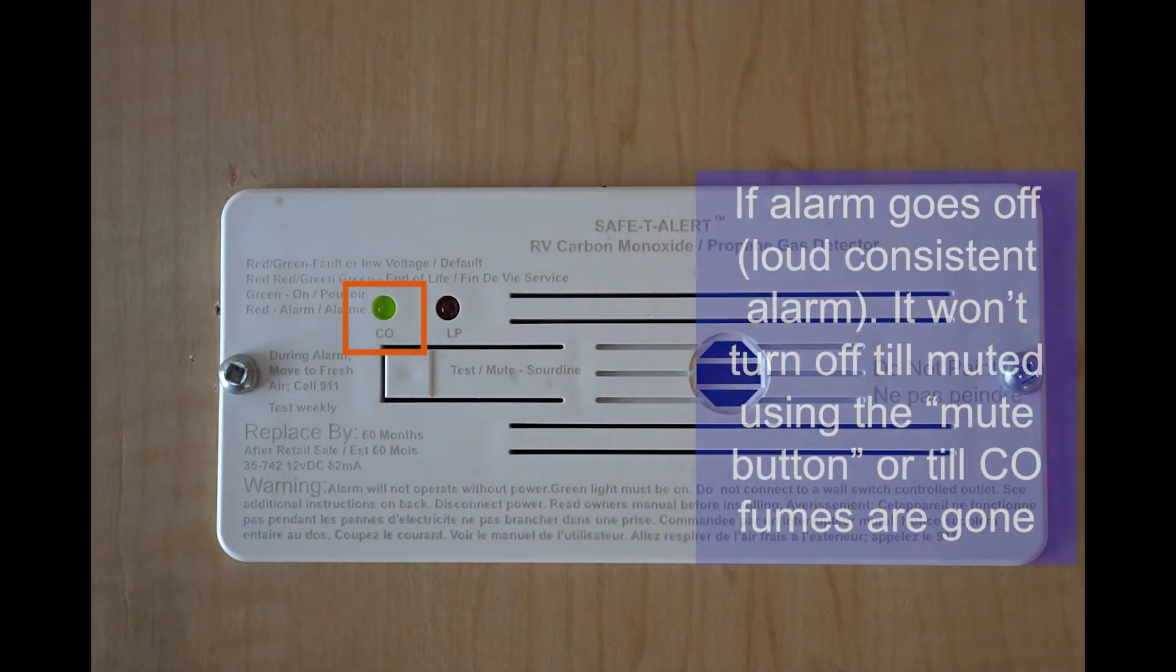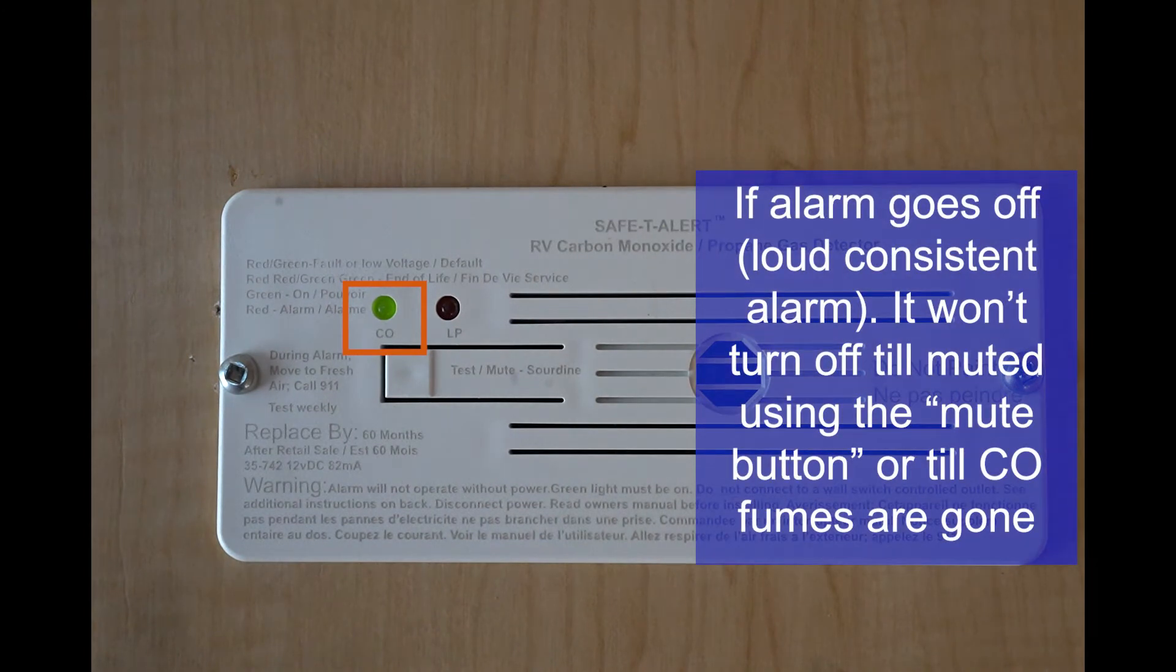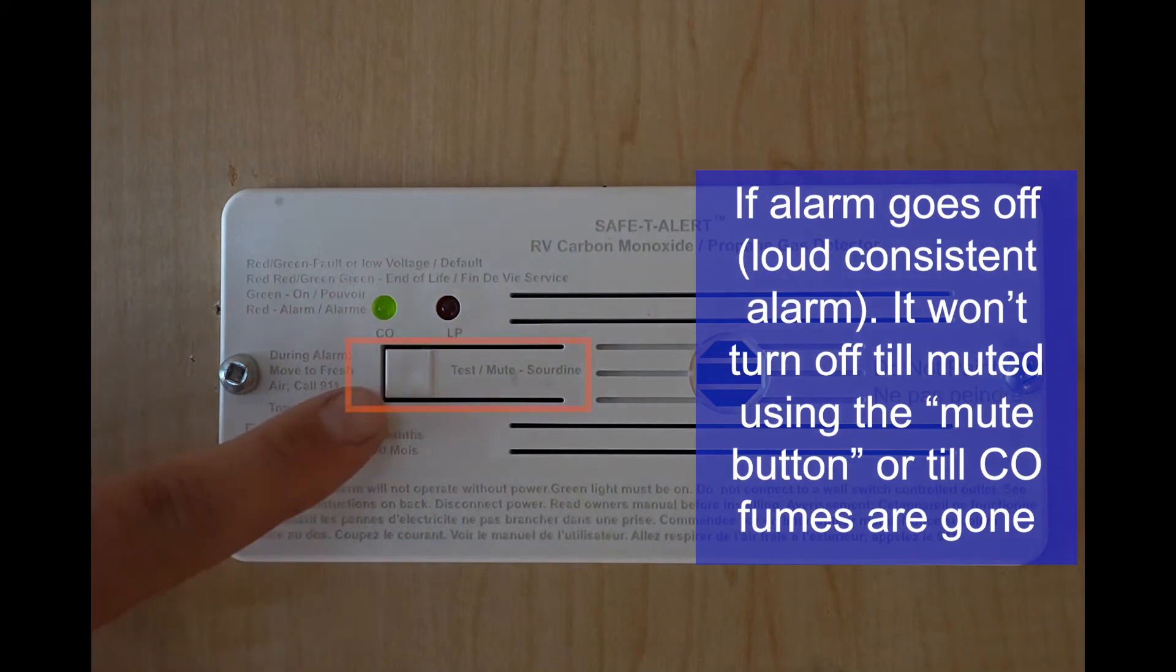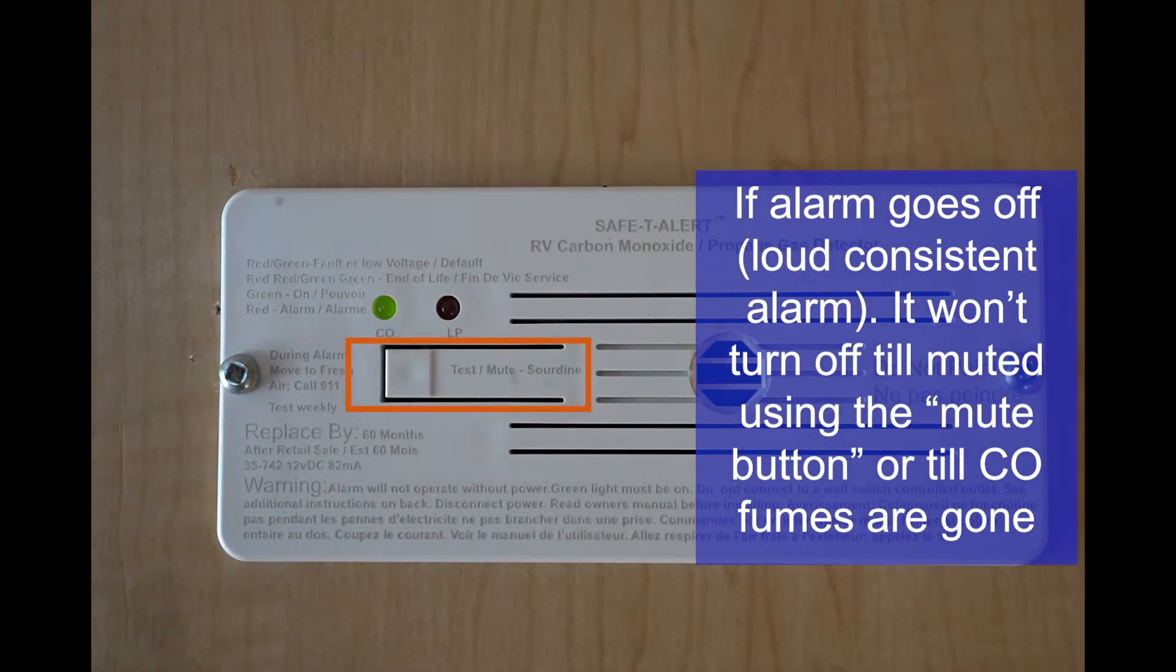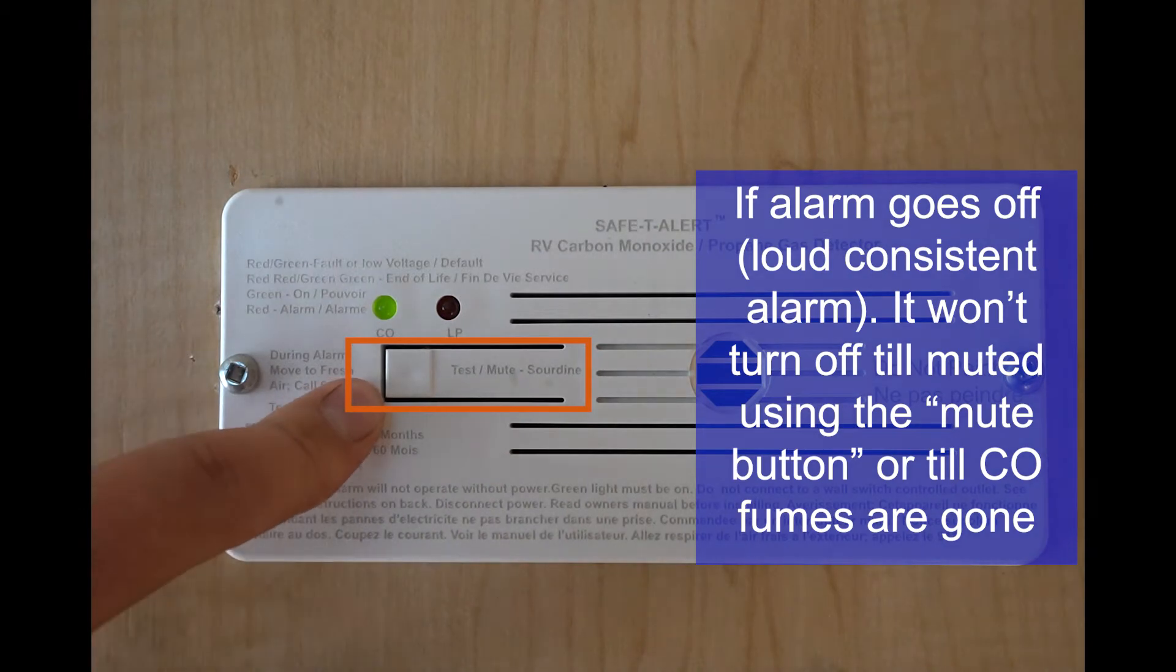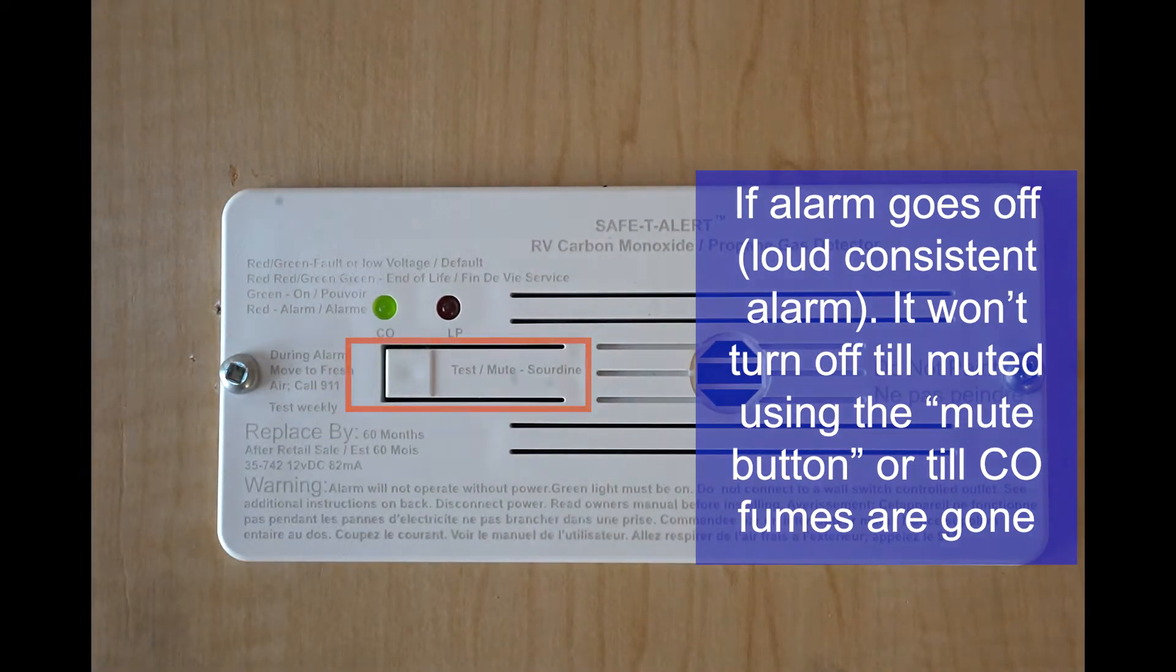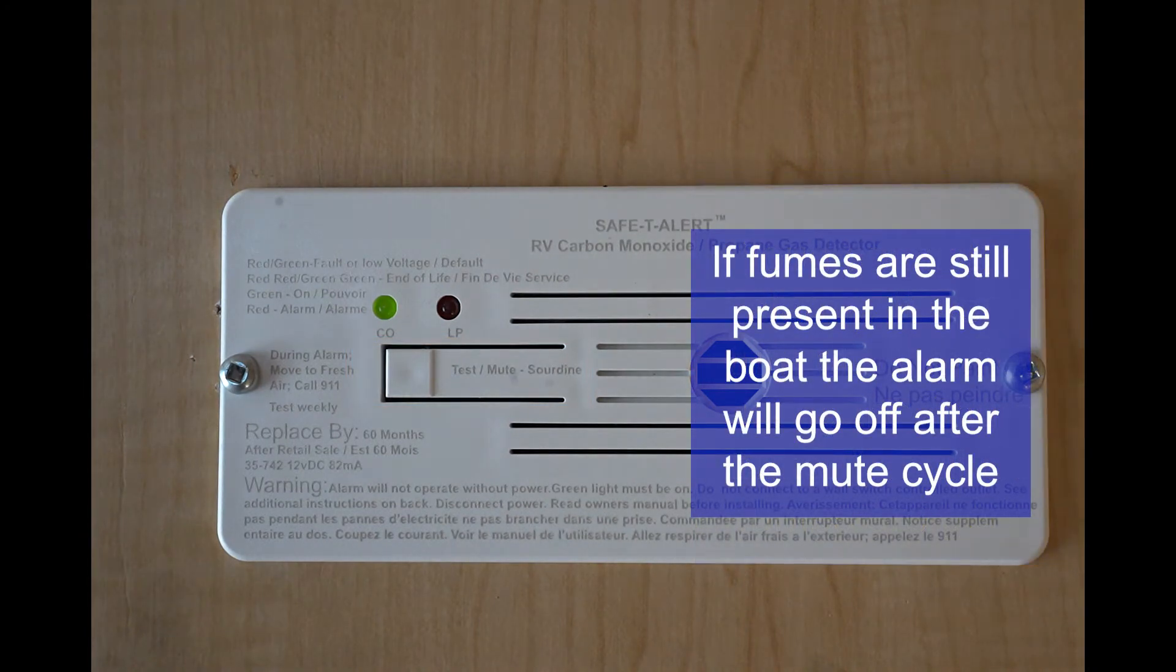If that alarm is going off, it's a very loud repetitive alarm. It won't stop going off until you either mute it or get rid of the gas. To mute it, press and hold this test and mute button here. The alarm will shut off, but if there are still fumes within the boat after that mute cycle, the alarm's going to go back off again.